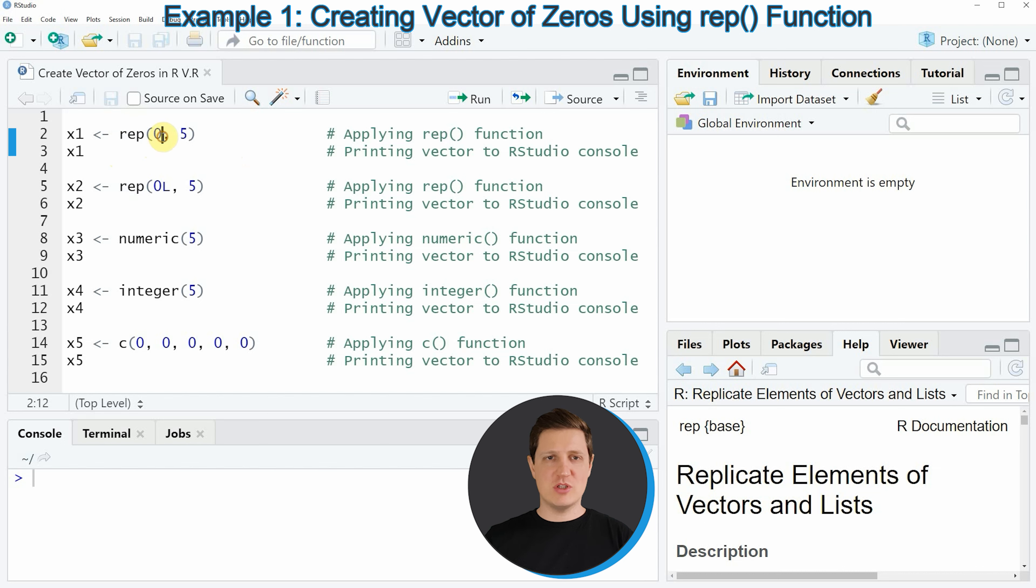Within the rep function we simply need to specify the value 0, then we need to specify a comma and then we need to specify the number of zeros that we want to show in our vector.